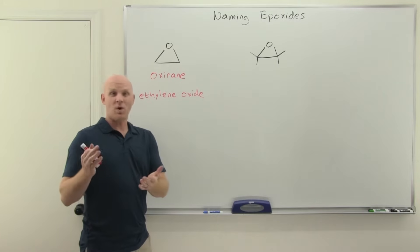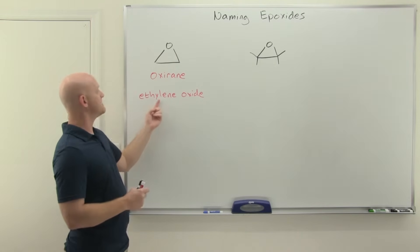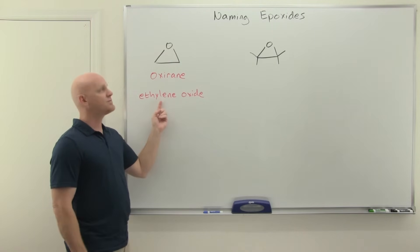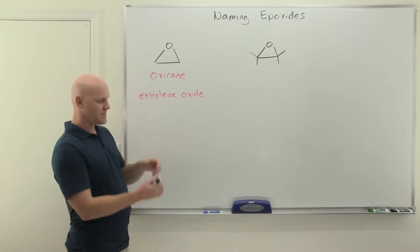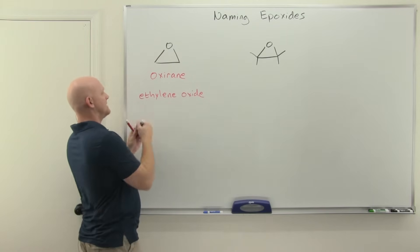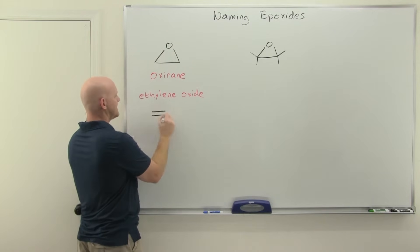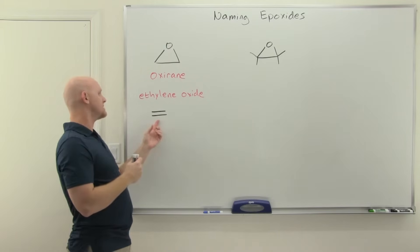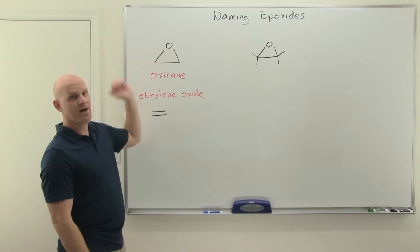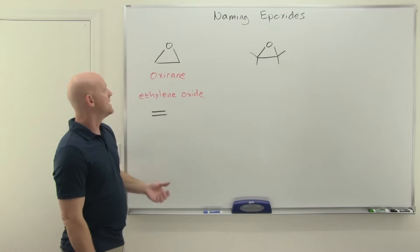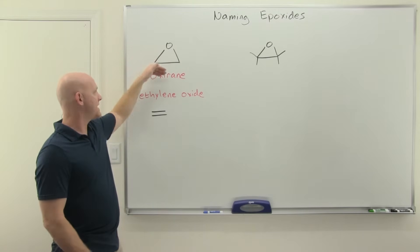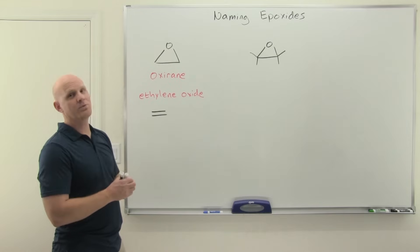And it turns out, historically, that's one way they were commonly named. They were named from the alkene that they were formed from. So the alkene that might have been used here to form ethylene oxide is ethylene. You add MCPBA to ethylene or any peroxy acid, and it turns it into what they called ethylene oxide.